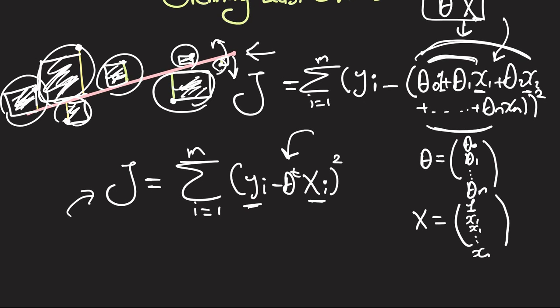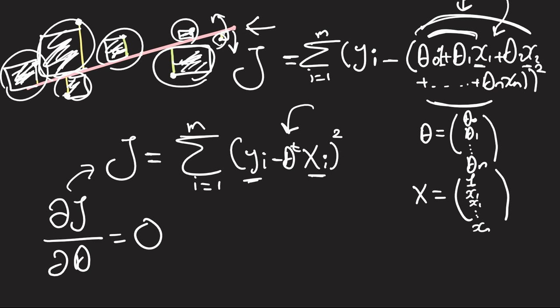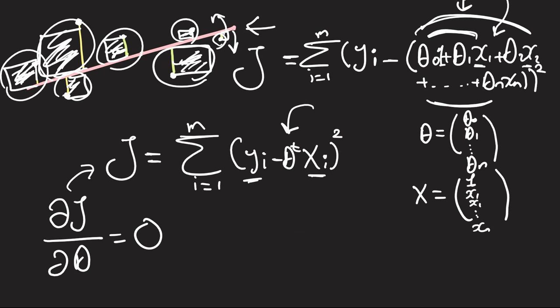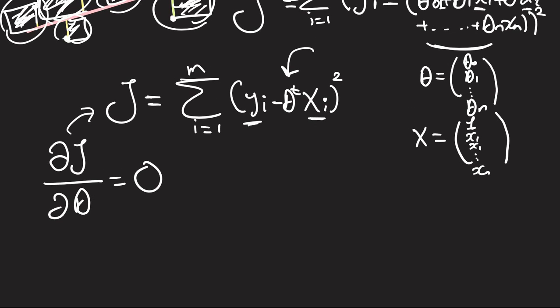So what we have to do is take the partial derivative of J with respect to theta and then equate that to zero and see what we come up with. And to do this, we're going to need some of the matrix calculus from the previous videos and also one or two more identities that I'm going to go over right now.